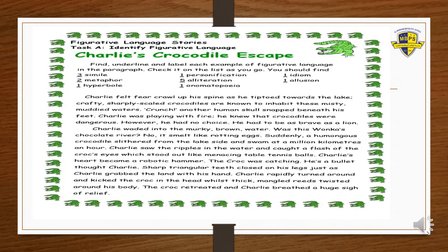The next figurative language we have to look for in the paragraph is one hyperbole. The hyperbole is 'swam at a million kilometers an hour.' This is a hyperbole because the writer is exaggerating the crocodile's speed, as nothing can move as fast as a million kilometers an hour.